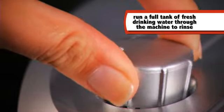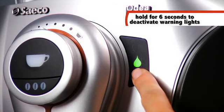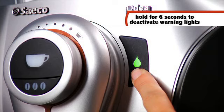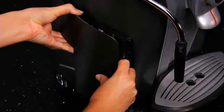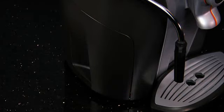When complete, close the knob. Press the hot water button for six seconds to deactivate the descaling light. Refill the water tank with fresh water and insert water tank into machine. The machine is now ready for use.